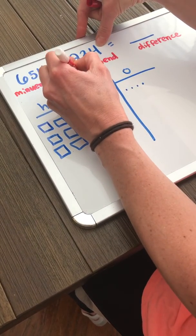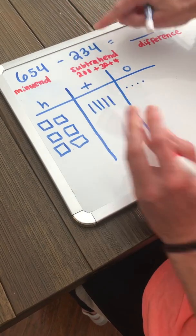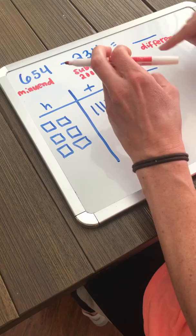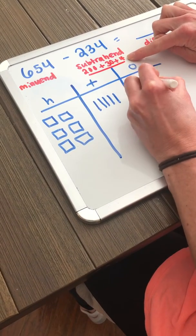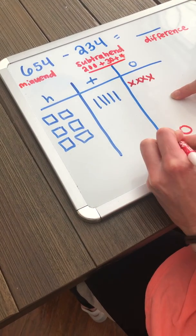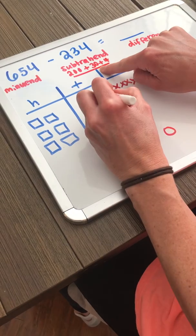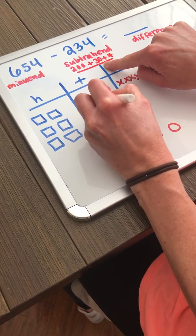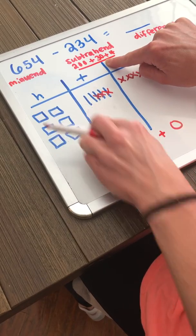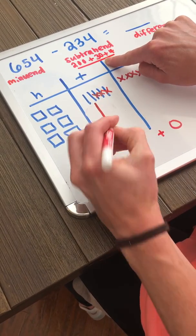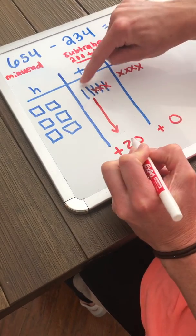Now I'm going to take away my subtrahend, so I know that that is 200 plus 30 plus 4. 234 is 200 plus 30 plus 4. So I'm going to take away four ones: 1, 2, 3, 4. I am left with no ones. I'm going to take away three tens or 30: 10, 20, 30. I have two tens left over. Two tens is worth 10, 20. So I have 10, 20 left.